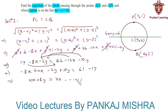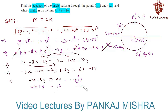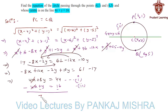Let us call 4x plus 8y equals 44 as Equation 1, and the equation of the line passing through the center, 4x plus y equals 16, as Equation 2. We can solve these two equations simultaneously to get the values of x and y. Subtracting Equation 2 from Equation 1, 4x cancels, and 8y minus y gives 7y equals 44 minus 16, which is 28.